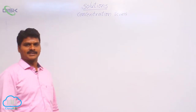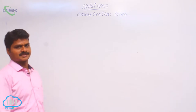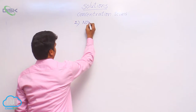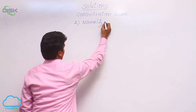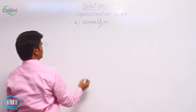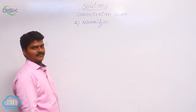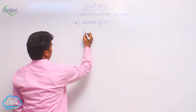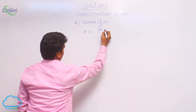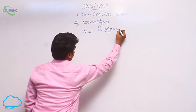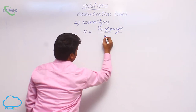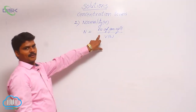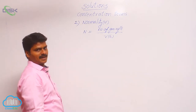In this class, I want to explain about the remaining terms in the concentration terms. The second term is normality, denoted by capital N. The formula for normality is: number of gram equivalents per volume of solution in liters.